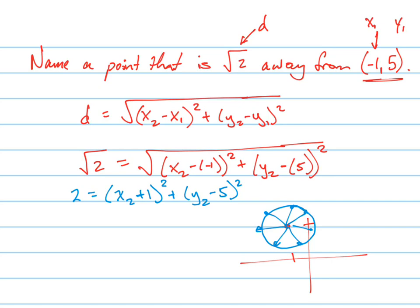All we have to do is find one point. Let's find this point right here — that seems like an easy one. What's the x value? It's 0. That's why I picked it, because it's easy to plug in. So plugging in 0: 2 equals (0 + 1) squared plus (y2 − 5) squared, which gives us 2 equals 1 plus (y2 − 5) squared.